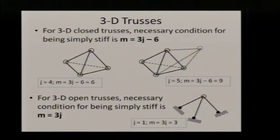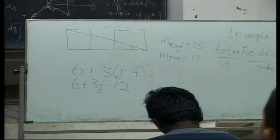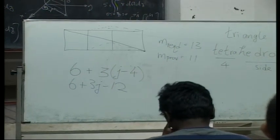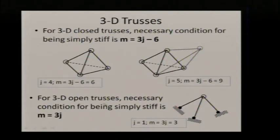And for every new joint greater than four joints, you need to have three new members. These are the four original joints which were associated with these six members. So you will have six plus three j minus twelve, which will give you your three j minus six. So here you can see that it obeys the rules. M required is six and you have provided six, m required is nine and you have provided nine members.